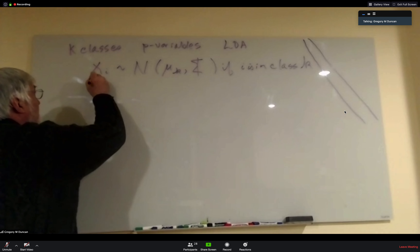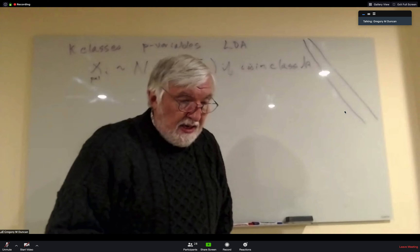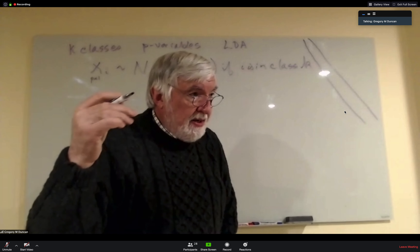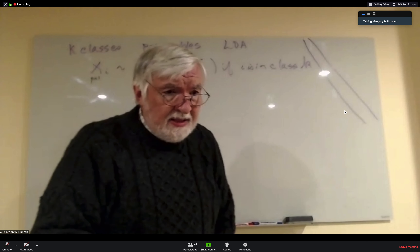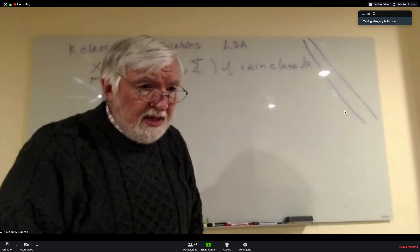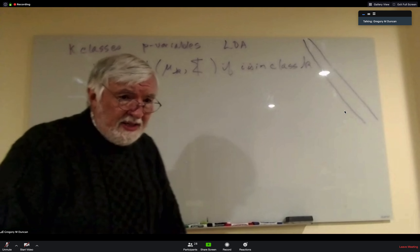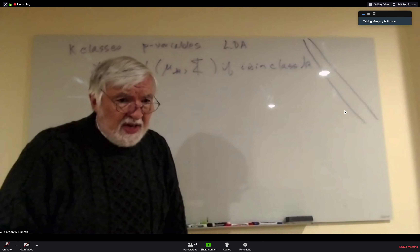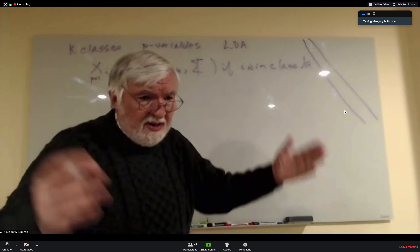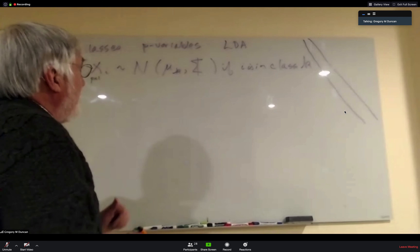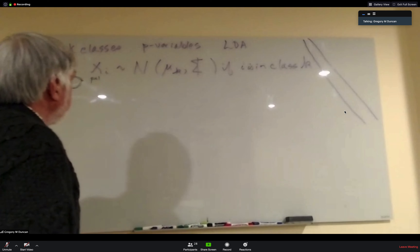X is a P-by-1 vector — your set of characteristics: height, weight, GPA. It can't be gender because gender isn't normally distributed — it's 0-1. It can't be ethnicity either; if there are 12 identified ethnicities, those can't be normal, they're just labels, dummy variables. Indicator variables or dummy variables aren't going to fit this, so LDA won't work well for that.